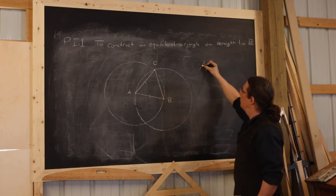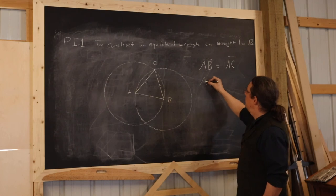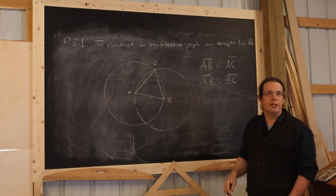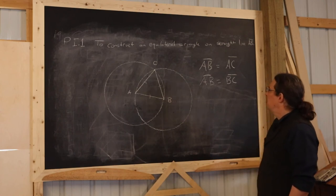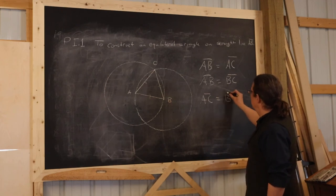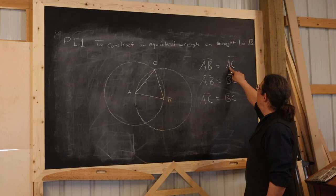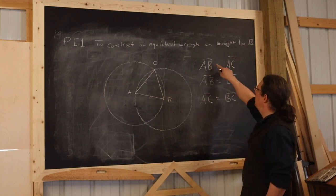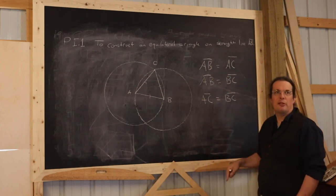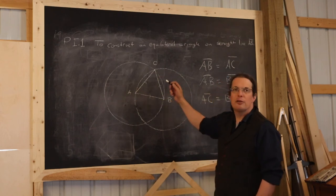Let's summarize: from the first circle, we know that AB equals AC. From the second circle, we know AB equals BC. And so we can then conclude that AC equals BC from Common Notion One — because if two things are each equal to the same thing, they must be equal to each other. Both AC and BC equal AB, so AC equals BC. And that's enough to convince us that this triangle is equilateral, because all three line segments are equal to each other.